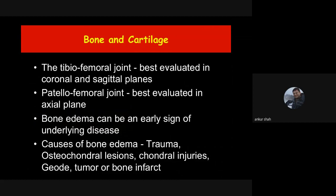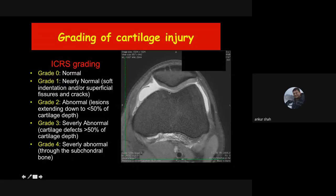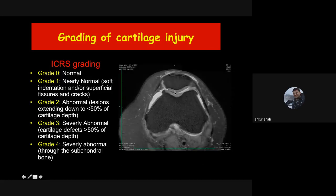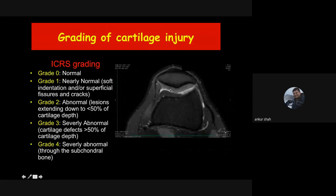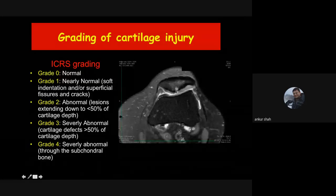Regarding bones and cartilage: the tibiofemoral joint is best evaluated in coronal and sagittal planes, while the patellofemoral joint is best seen in the axial plane. Always look for bone marrow edema and cartilage injuries. Cartilage is graded from zero to four: grade zero is normal, grade one is focal hyperintensity in the cartilage, grade two is fissures extending less than 50% of depth, grade three is fissures extending more than 50% of depth, and grade four is full thickness injury associated with subchondral bone marrow edema or cystic changes.